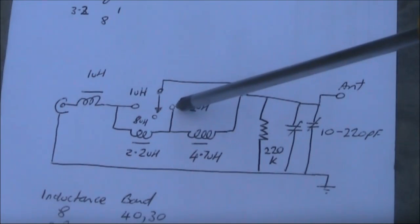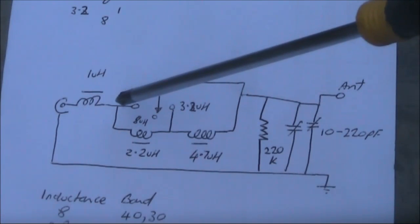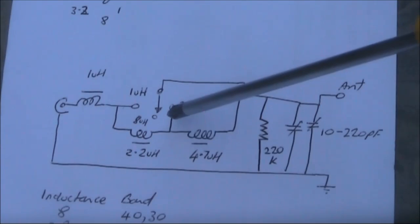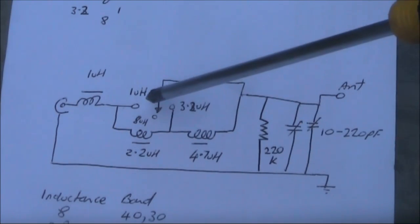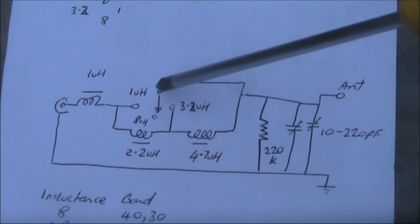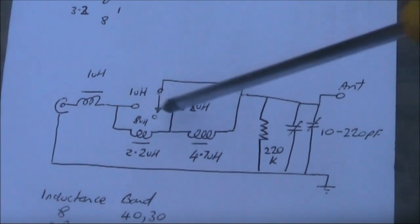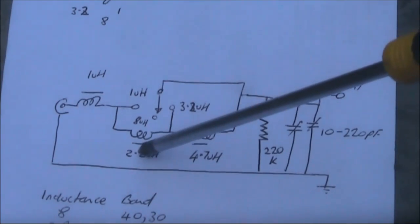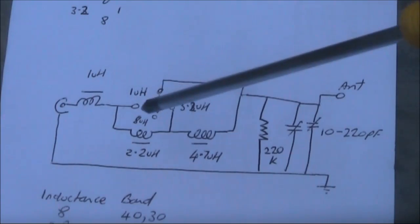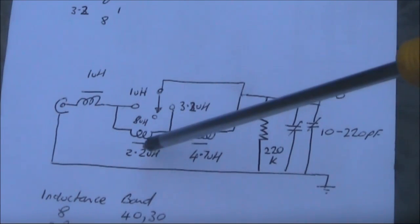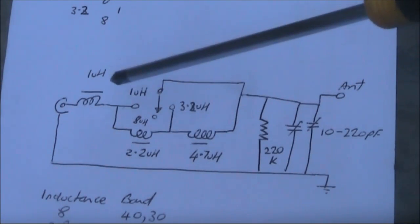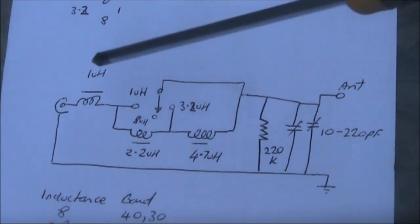When the switch is off to one or the other sides, then you've got less inductance. One side, both inductors are shorted out, giving you only 1µH, good for use in the higher HF bands. At the other end, one inductor is shorted out, giving you 2.2 plus 1, or 3.2µH. That's good for the middle HF bands, like 10 and 14 MHz.